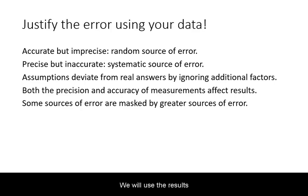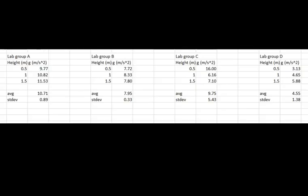We will use the results to identify whether we should be looking for random sources of error or systematic sources of error and conduct some sample calculations to quantify whether these sources of error explain the observed inaccuracies or imprecision. Here are example results from four lab groups based on their deduced G values at each of the given heights.